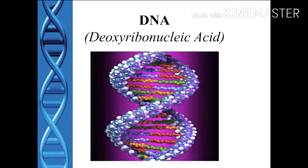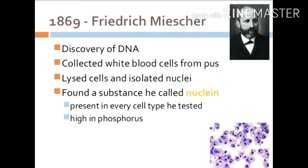The characteristics that are inherited and transmitted from one generation to the next are explained at the molecular level by nucleic acids. This nucleic acid was first isolated by a scientist, Frederick Meischer, from the nuclei of pus cells.